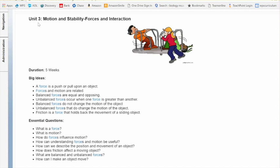So here we are starting Unit 3, Motion and Stability. We're looking at forces and interaction. The duration of this unit is five weeks. This one is a long one because there's an awful lot involved in it.